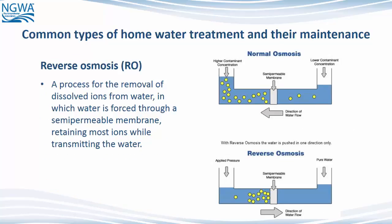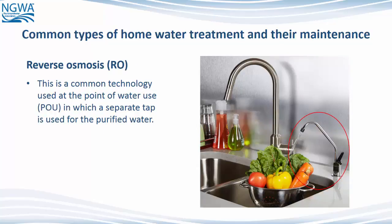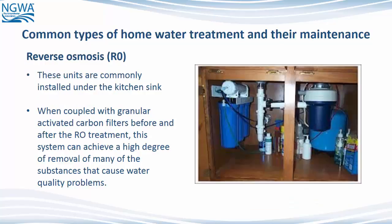Next, reverse osmosis or RO. This is a process for the removal of dissolved ions from water, in which water is forced through a semi-permeable membrane, retaining most ions while transmitting the water. This is a common technology used at the point of water use, or POU, in which a separate tap is used for the purified water. These units are commonly installed under the kitchen sink. When coupled with granular activated carbon filters before and after the RO treatment, this system can achieve a high degree of removal of many of the substances that cause water quality problems.